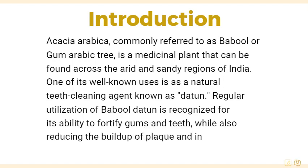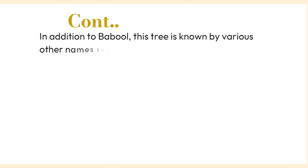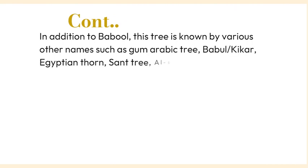In addition to Babool, this tree is known by various other names such as gum arabic tree, Babool keekar, Egyptian thorn, santh tree, alsanth, prickly acacia, and thorn mimosa.